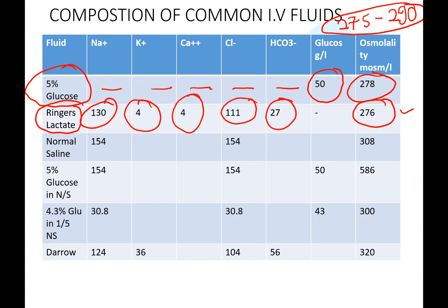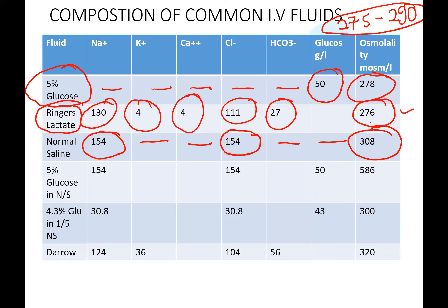Normal saline has 154 mmol of sodium and 154 mmol of chloride, but it does not have bicarbonate or glucose, and its osmolality is 308 mOsm — slightly hypertonic. Ringer's lactate, by contrast, has similar constituents to plasma and an osmolality within the plasma range, making it more physiologic.